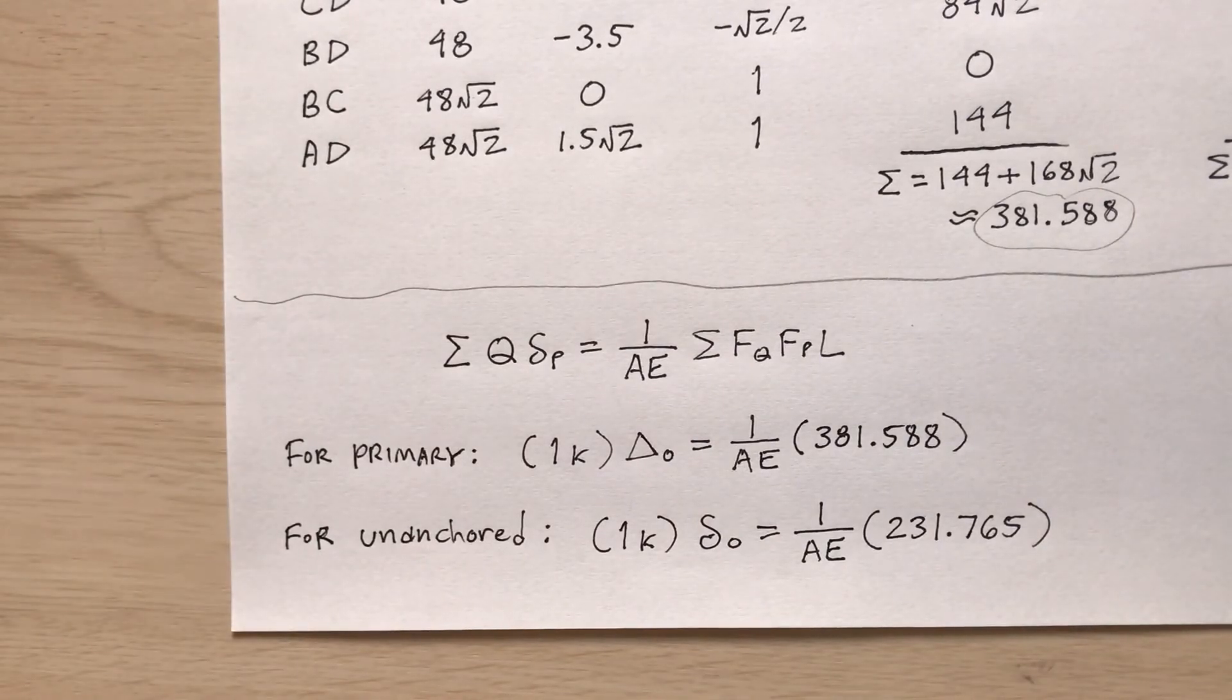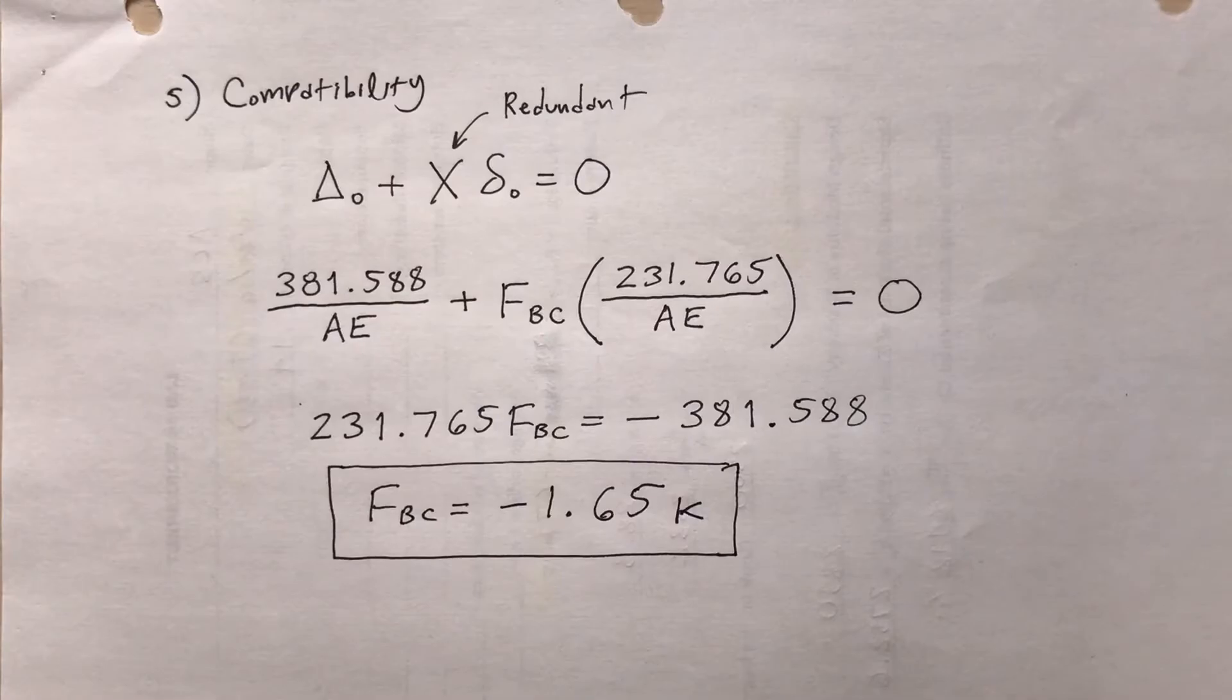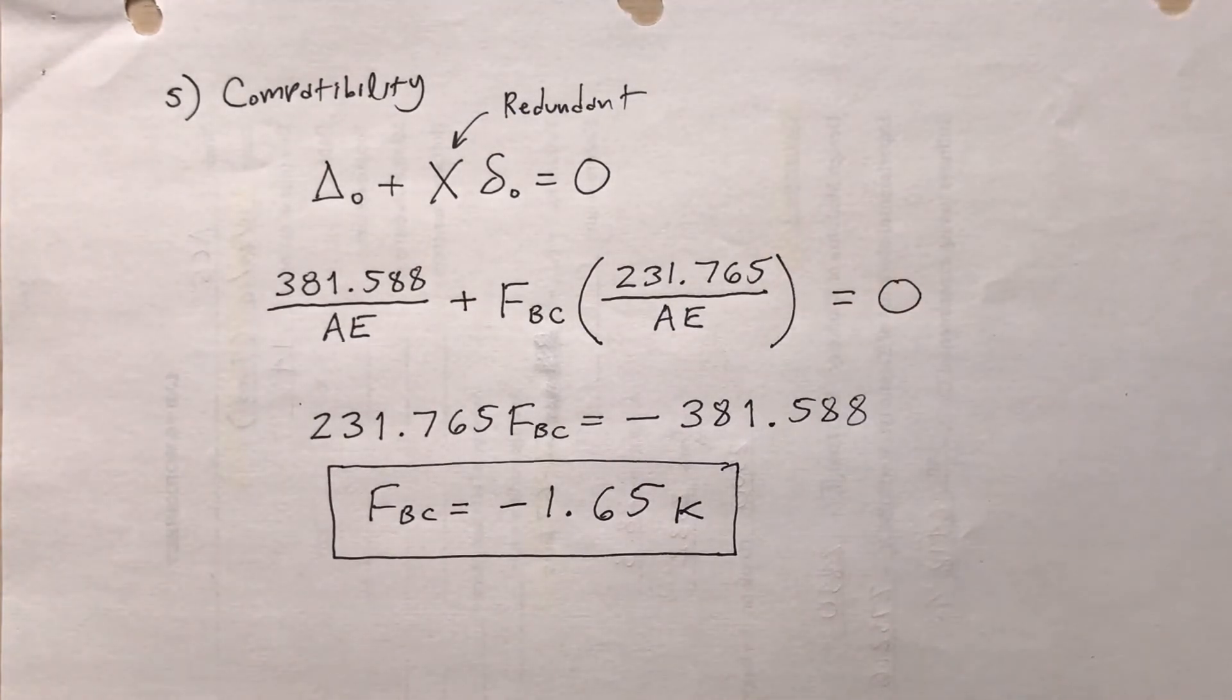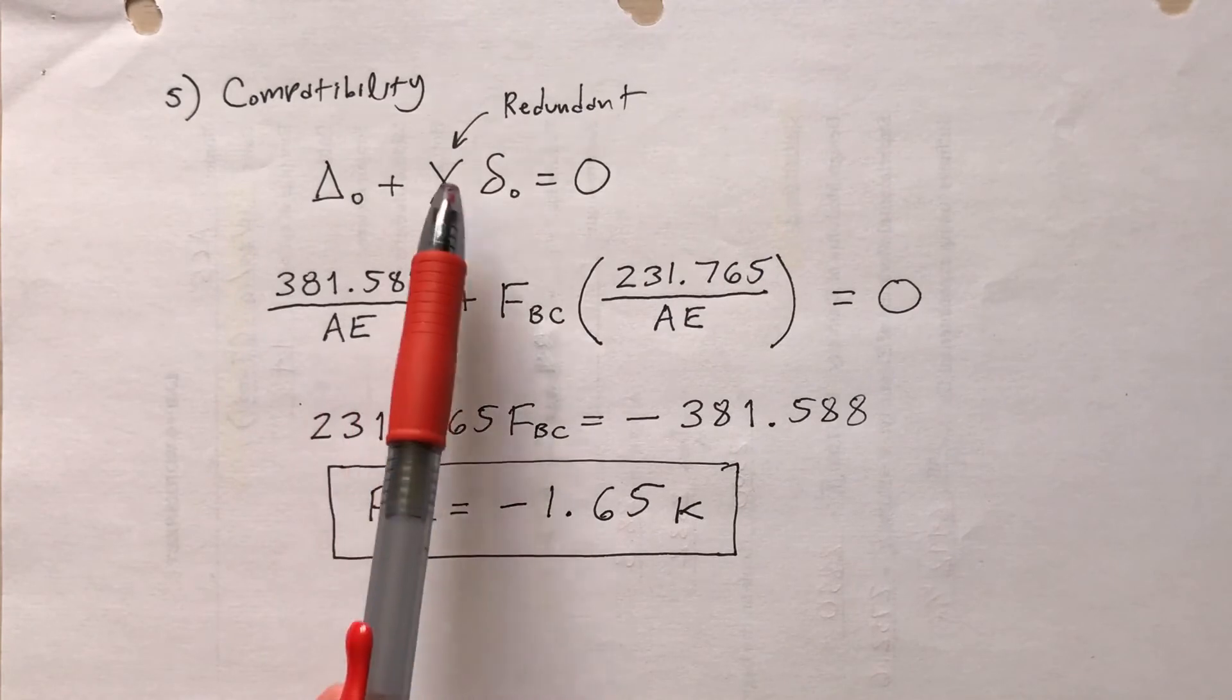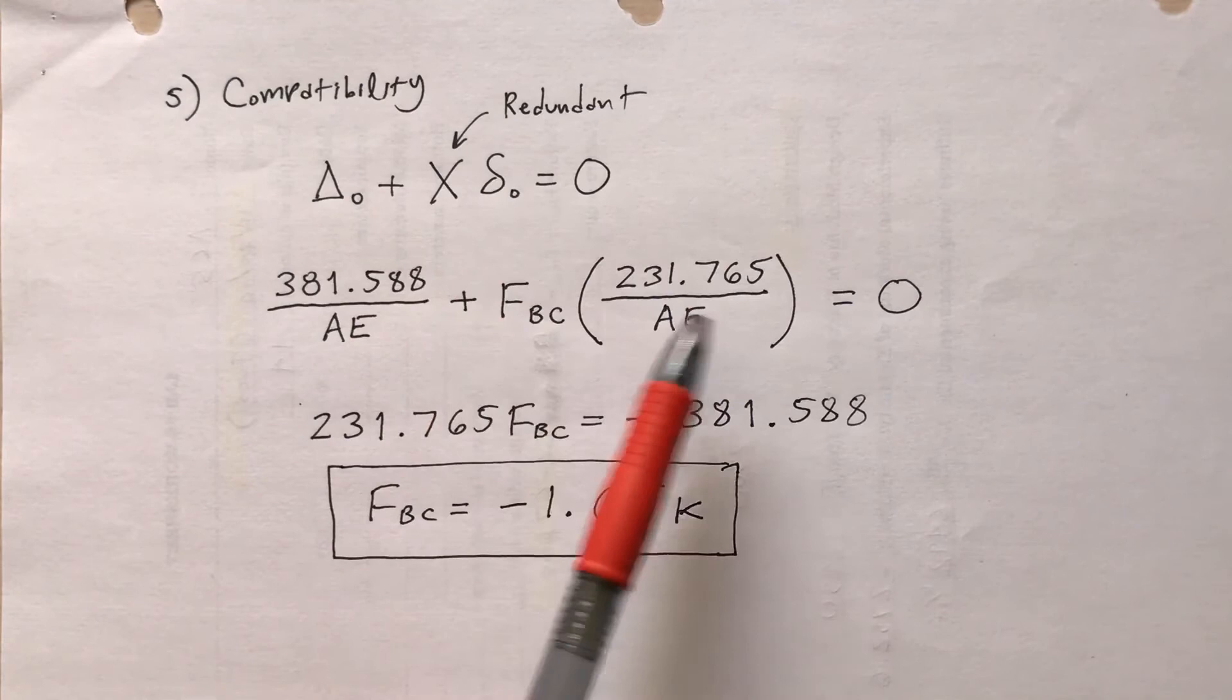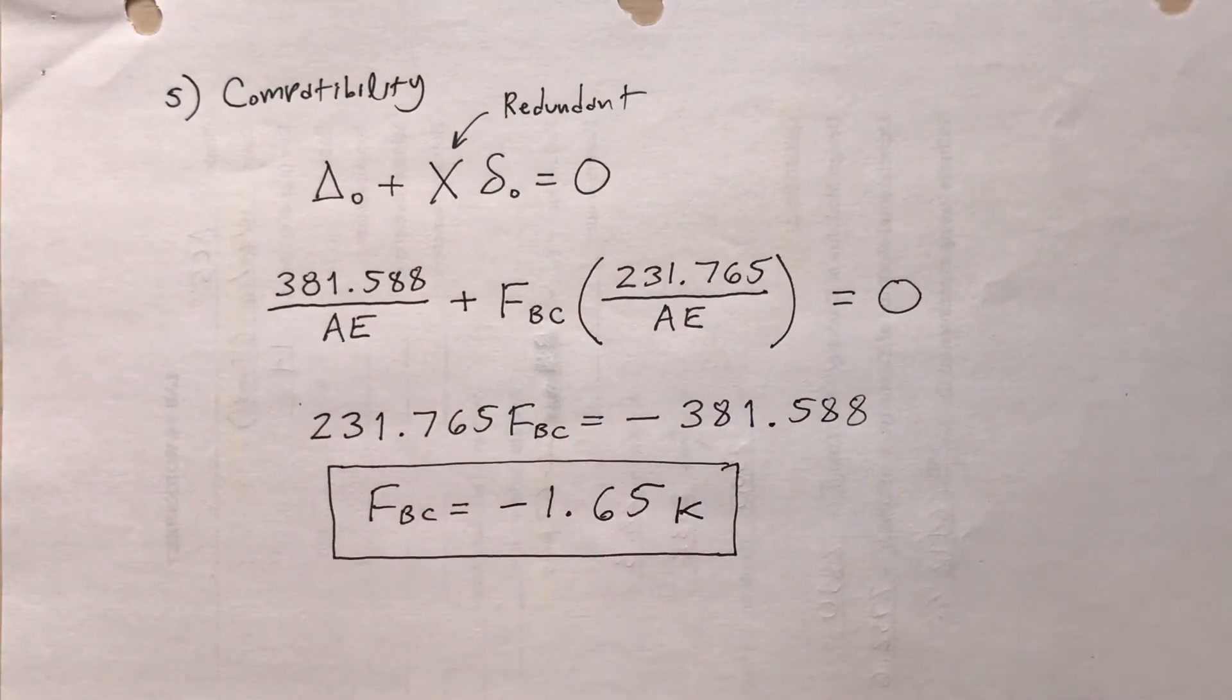So if I knew what AE was, I could calculate delta sub zero and little delta sub zero. I don't really need that because now I'm going to proceed to compatibility. Step four would be to repeat this with the other redundants, but I only had one redundant bar, so no need for step four. So step five is compatibility. Stick everything into the compatibility equation. So delta sub zero, I found that. X is the redundant. In this case, it's the bar force in BC. Little delta sub zero found that. Solve for F sub BC. Negative 1.65 kips.